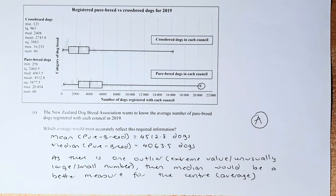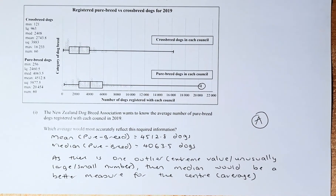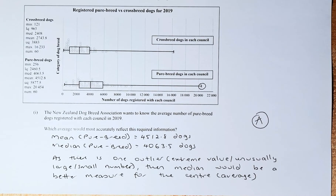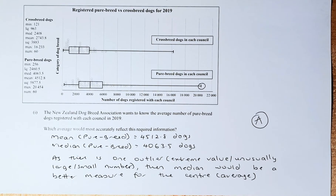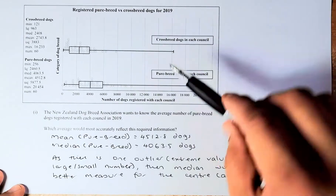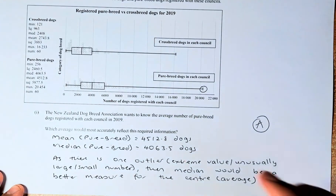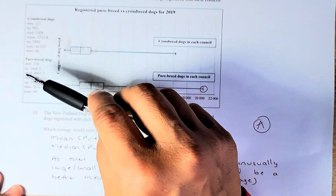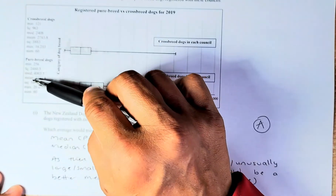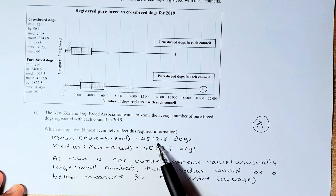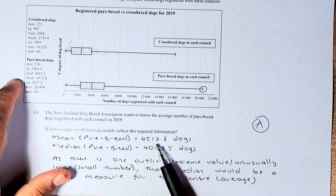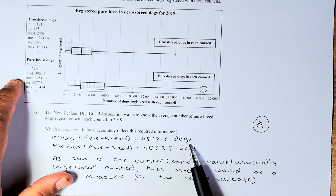The New Zealand Dog Breed Association wants to know the average number of purebred dogs registered with each council in 2019. What average would most accurately reflect this required information? We are interested in purebred dogs, so everything above it is irrelevant. Looking at the statistics, there are two centre or average measures: median and mean. The mean for purebred dogs is 4512.8 dogs.